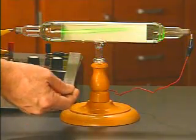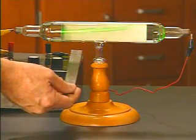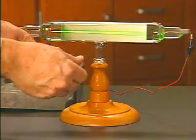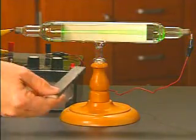If we reverse the magnet, we would predict that the beam would be deflected in the opposite direction, and we observe that the beam is deflected downward.